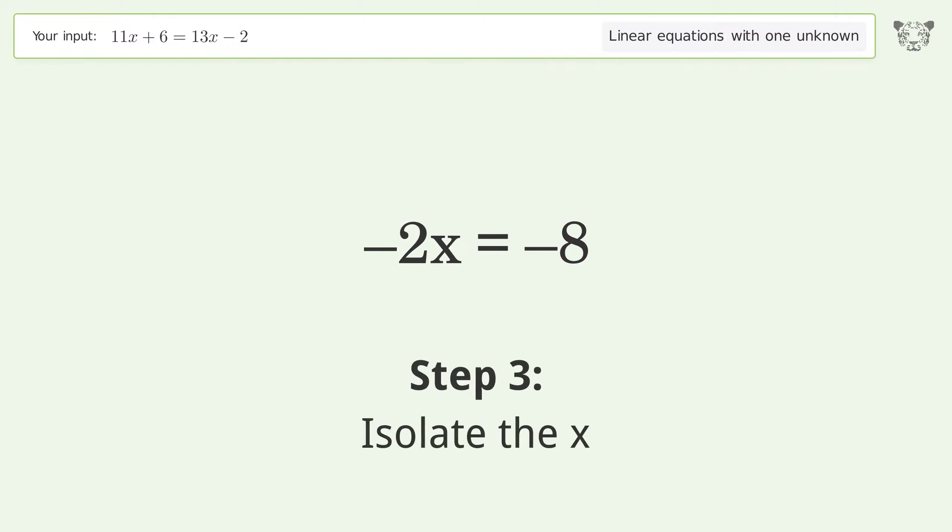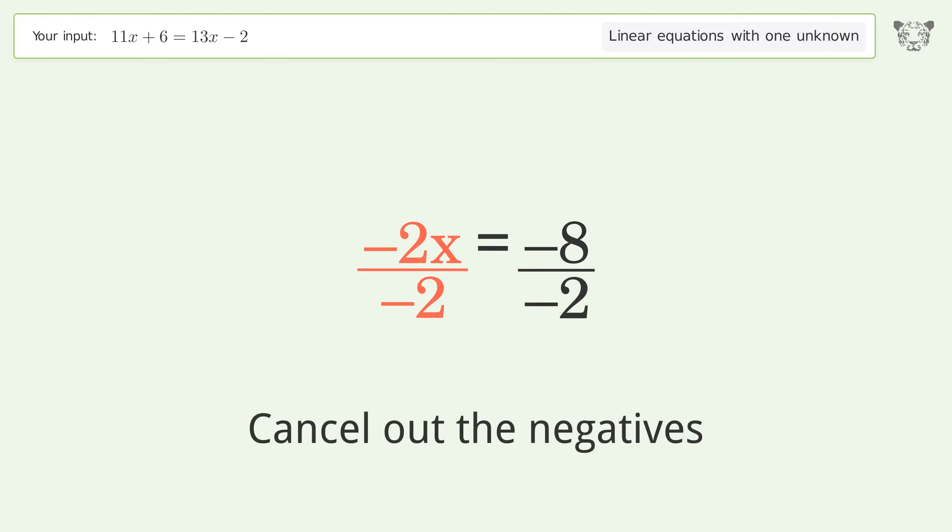Isolate the x. Divide both sides by negative 2. Cancel out the negatives. Simplify the fraction.